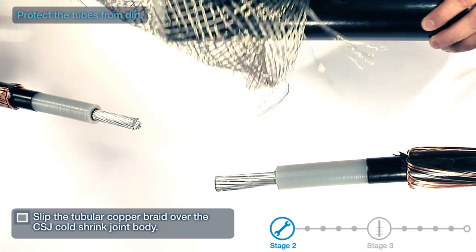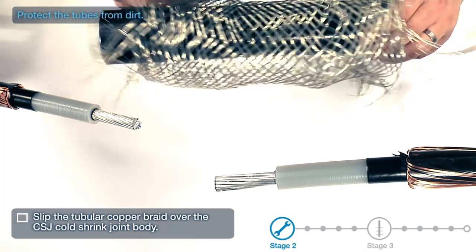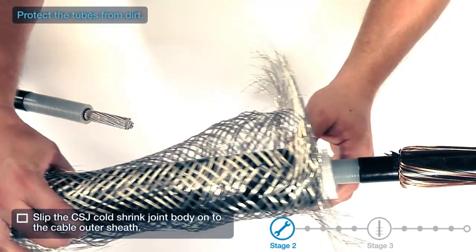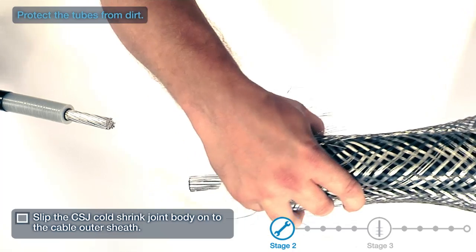Slip the tubular copper braid over the CSJ cold shrink joint body. Slip the CSJ cold shrink joint body onto the cable outer sheath.